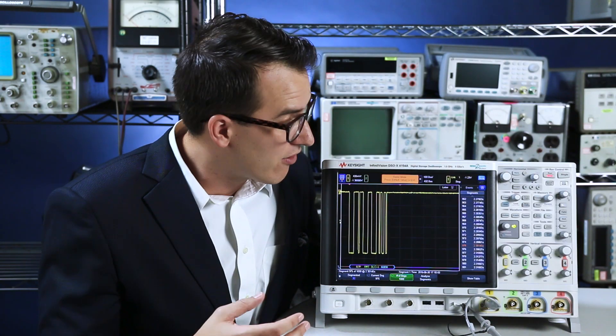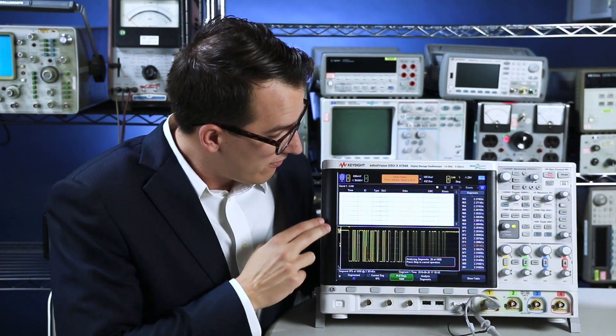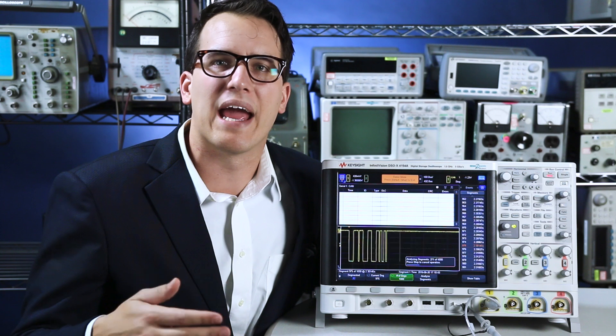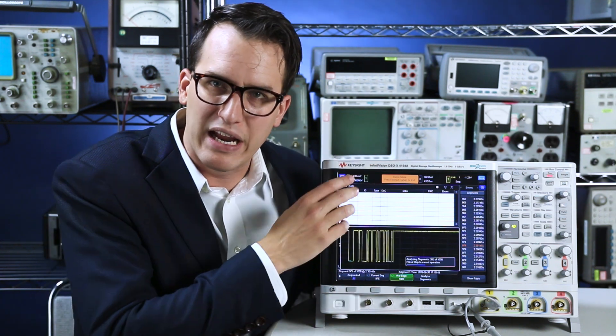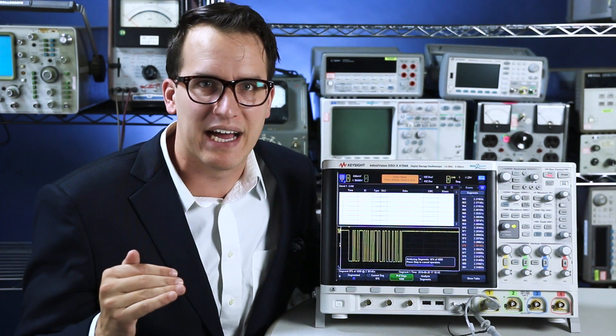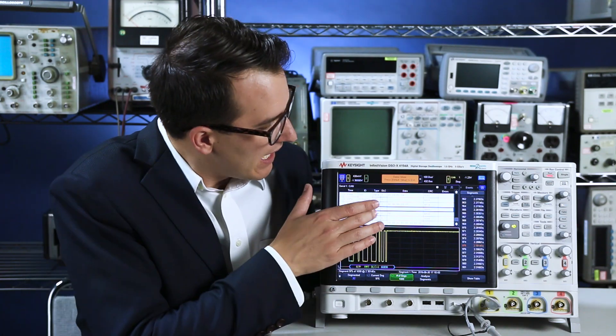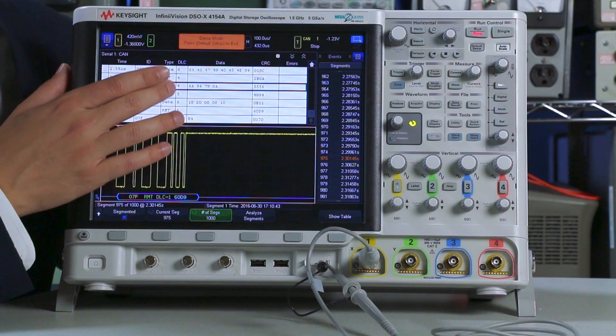Another way to analyze data on a scope is using the lister. And the lister is essentially a table of information. And the scope's going to go through and analyze all my segments and put together a list of packets in time with time tags. So that took about 15 seconds. And I can scroll through and see my list of data.